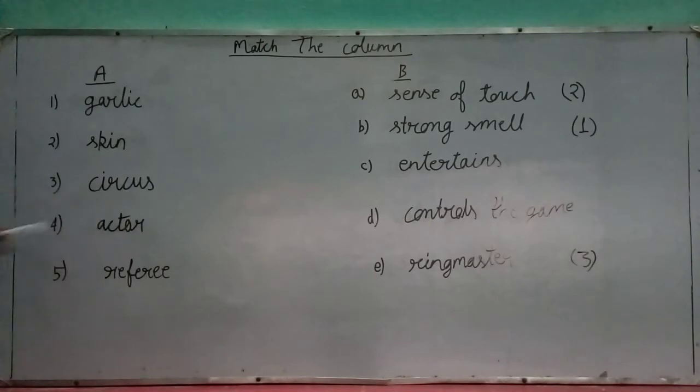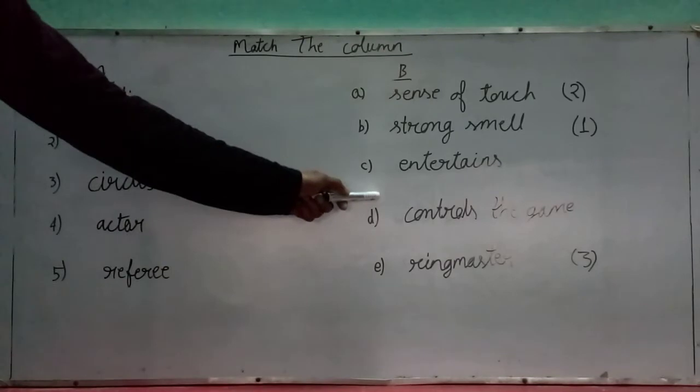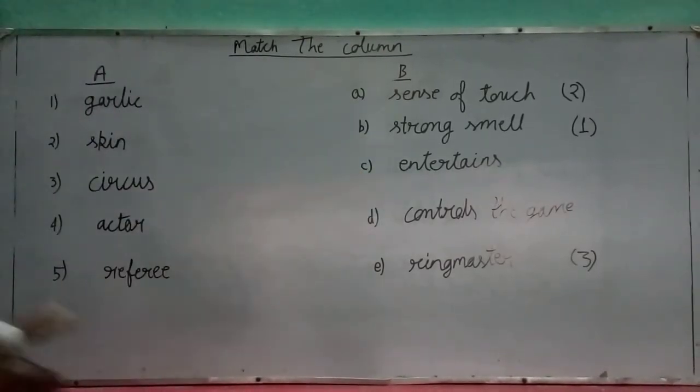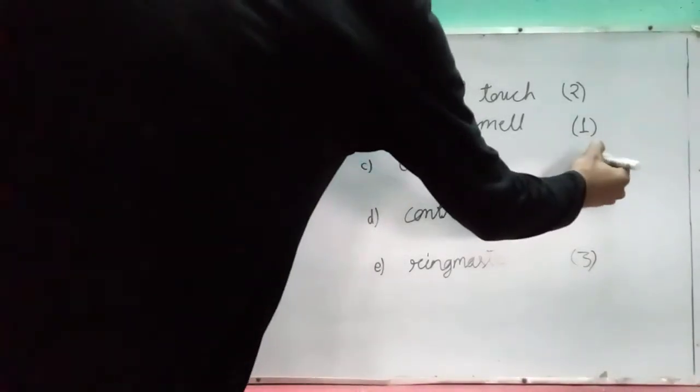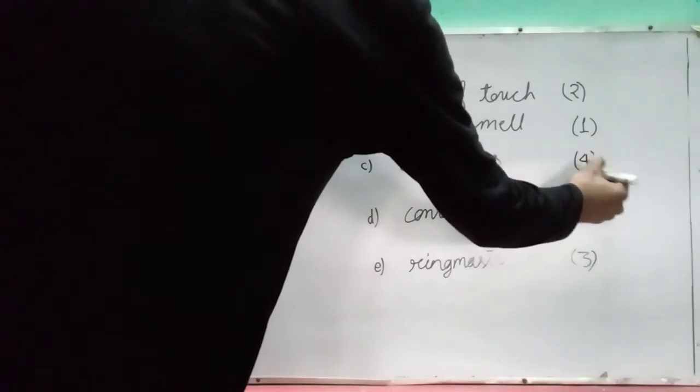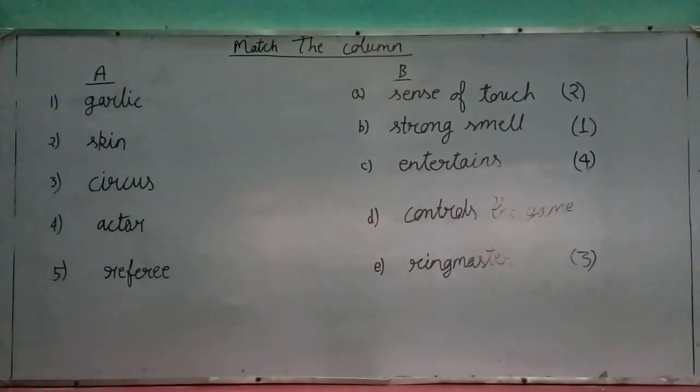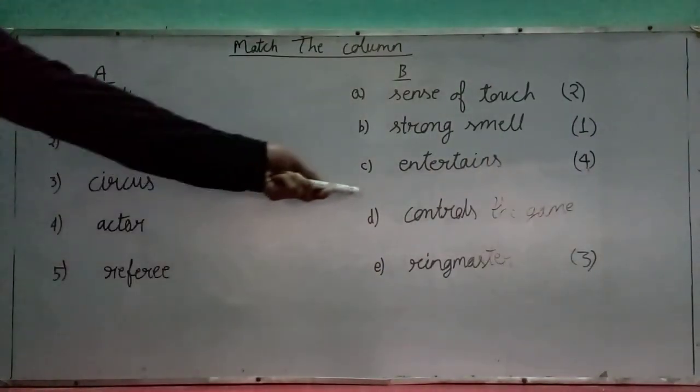Four, actor. You will know that actor is a person who works in movies, acting and entertains. Movies watching and entertains. So the fourth option is C, entertains. After four, the last option is number five.